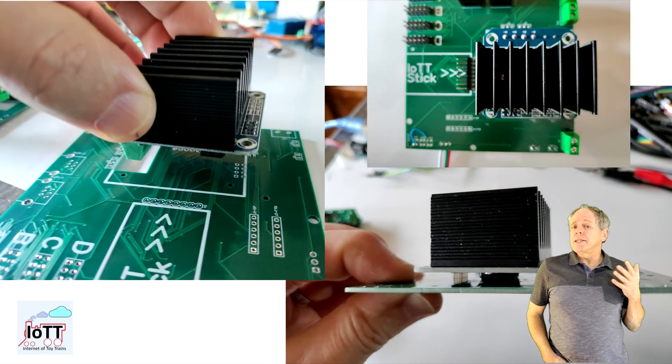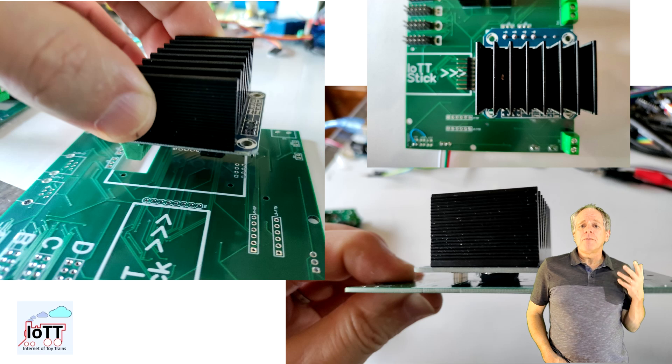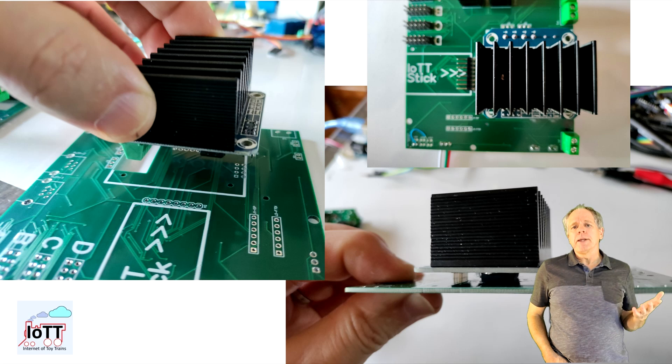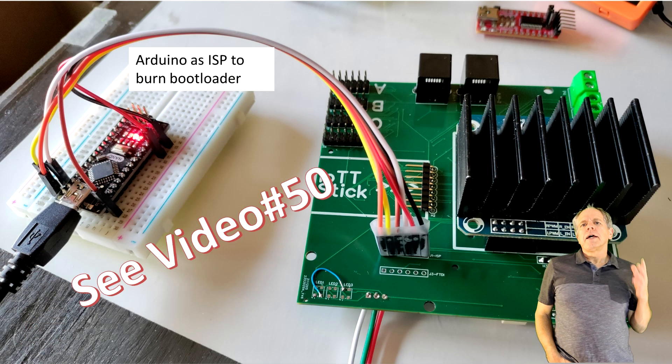The only module I did not install at this point in time was the IBT2 H-bridge as it is pretty bulky and I can test all signals without the bridge being installed. But of course I verified that the opening fits the dimensions of the board and that the connections for power and the control pins can be made without problems once I am ready to install it.